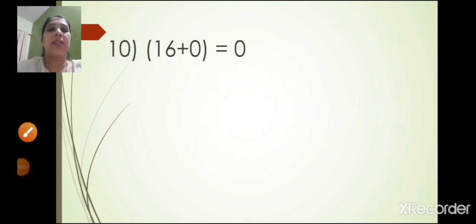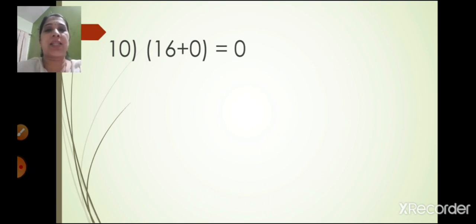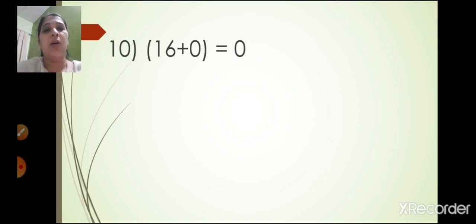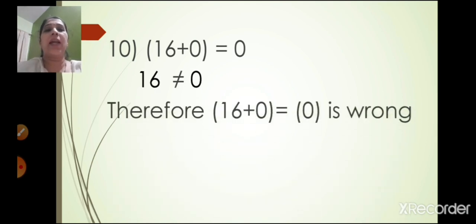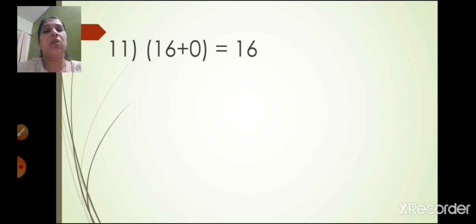The tenth one: 16 plus 0 is equal to 0. Now 16 plus 0 is 16, and the other number is 0. So 16 is not equal to 0. Therefore 16 plus 0 is equal to 0 is wrong.